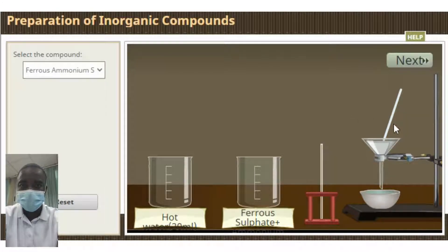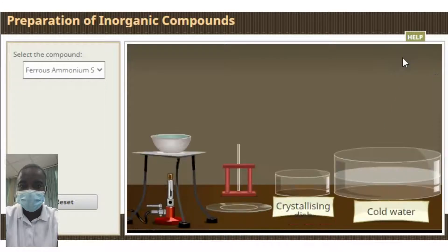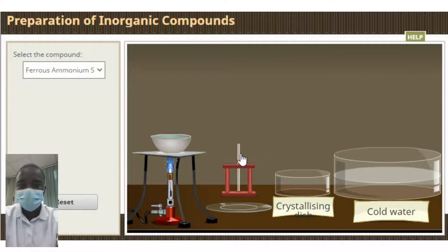Ligands are molecules or ions that donate electrons to the metal atom. The metal atom donates electrons to the ligand in a process called electron donation. The electrons that are donated by the metal atom occupy orbitals in the ligand.